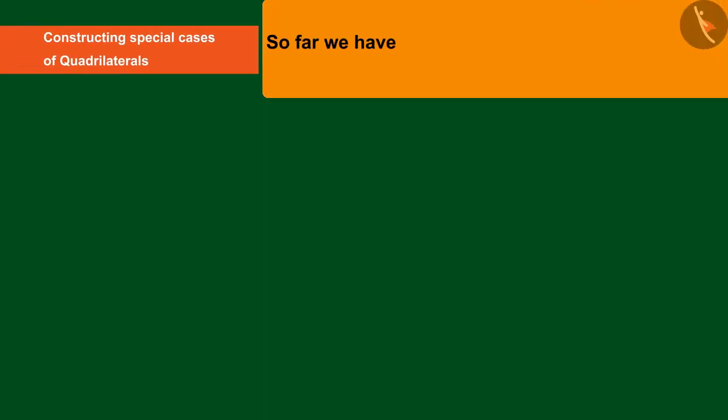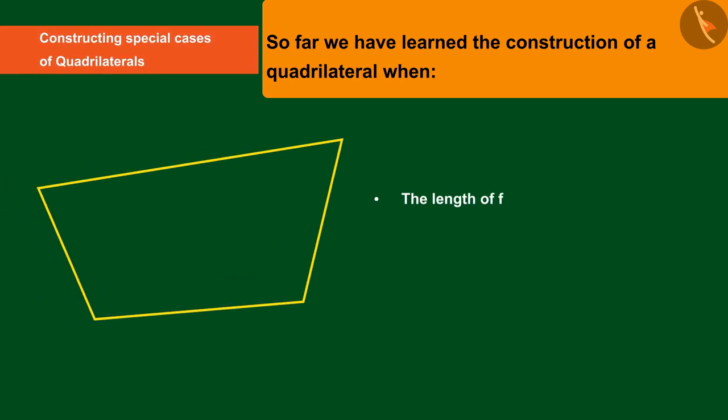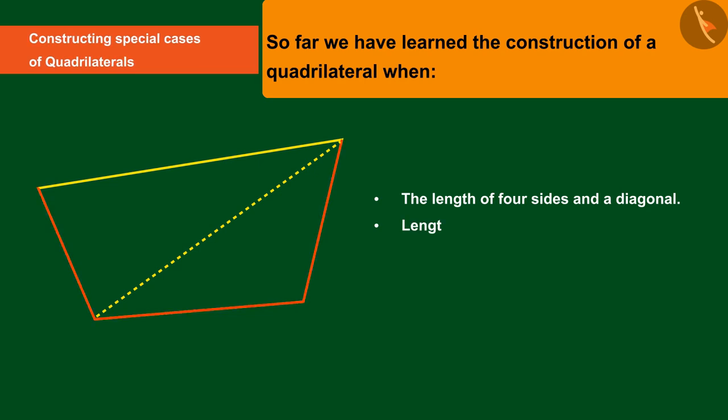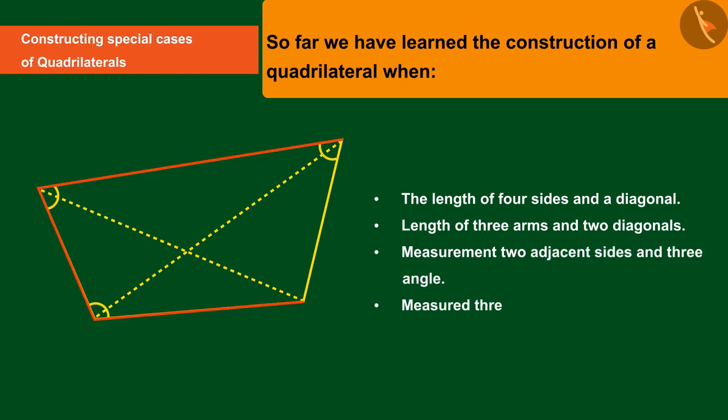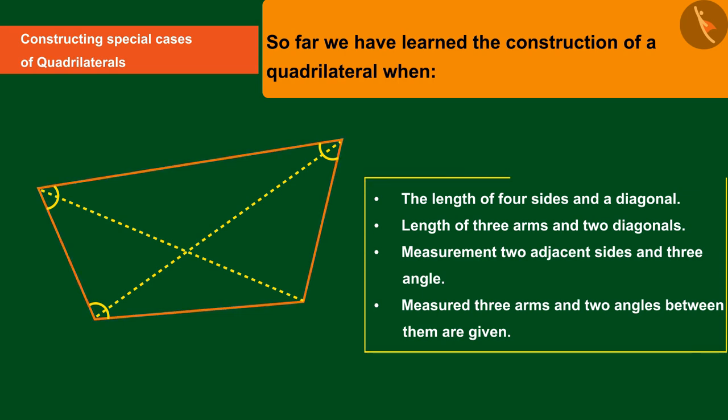So far, we have learned the construction of a quadrilateral when the length of four sides and a diagonal, length of three sides and two diagonals, measurement of two adjacent sides and three angles, or measured three sides and two angles between them are given. As you know from the previous video, any five measurements are required to construct a quadrilateral.